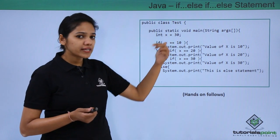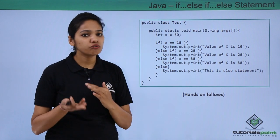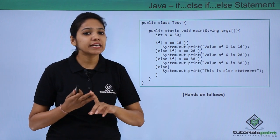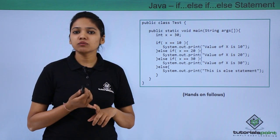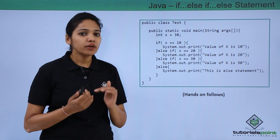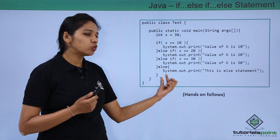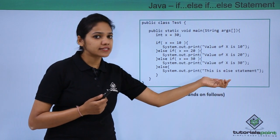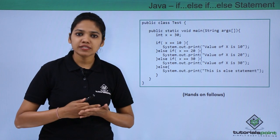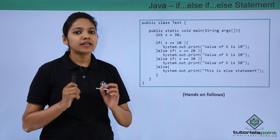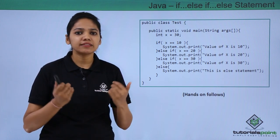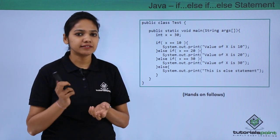What if the value of x were 40? None of the first three conditions would be satisfied — not equal to 10, 20, or 30. In that case, it would execute the else statement, printing that none of the conditions were satisfied.